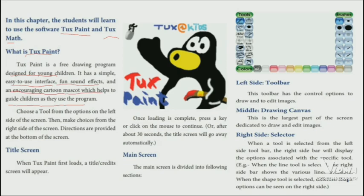Tux Paint can be used in the following way: choose the tool from the options on the left side of the screen, then make a choice from the right-hand side of the screen. The directions are provided at the bottom of the screen. You can do what you want on either side of the screen.